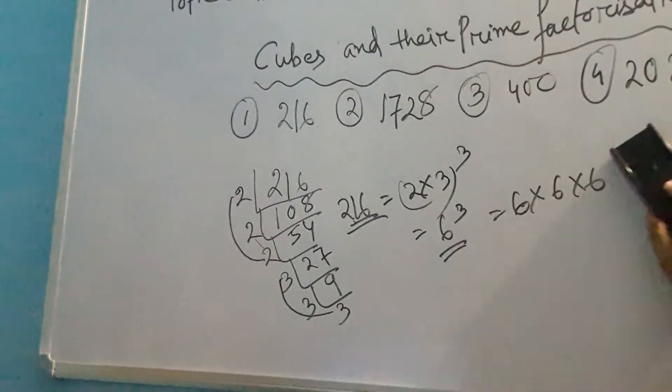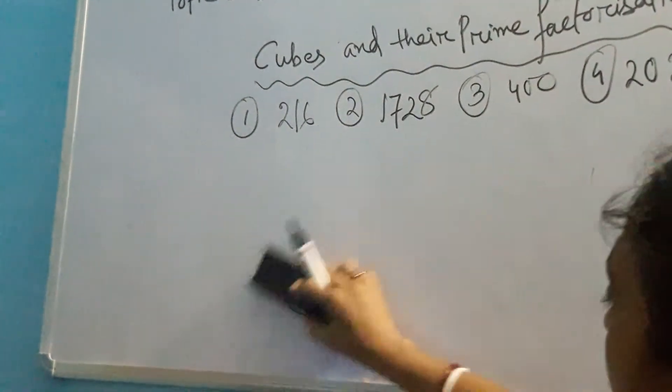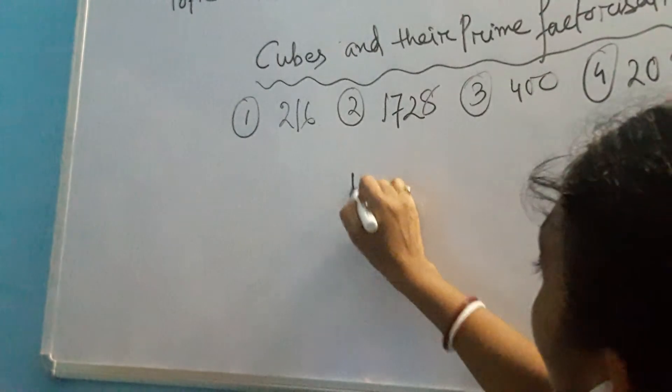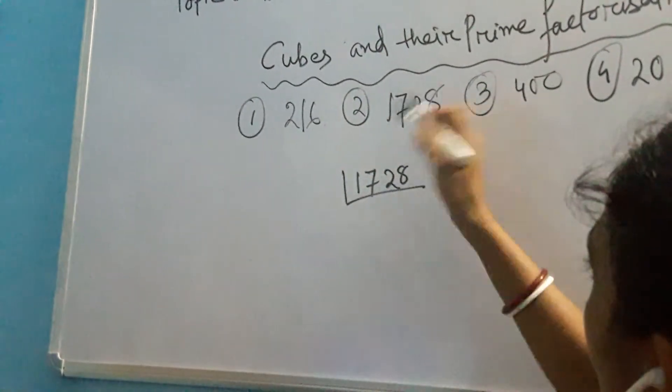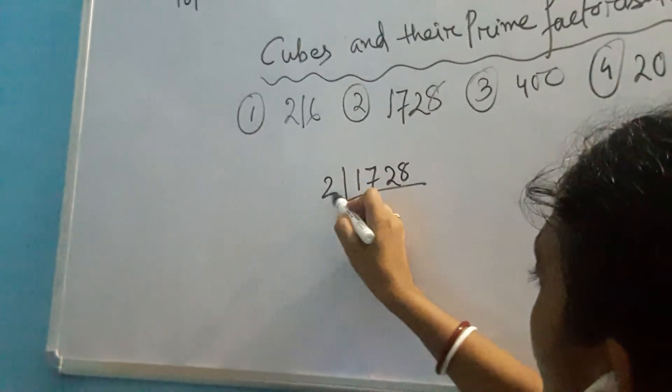Let's come to the next number. Here we have 1728. Here my number is 1728. Let's factorize this one. Again it is an even number, so I will start with 2.